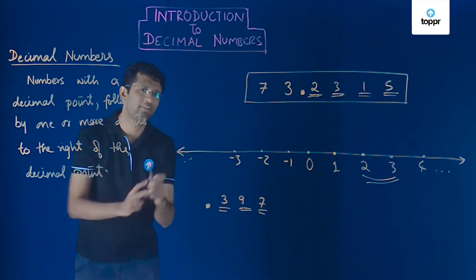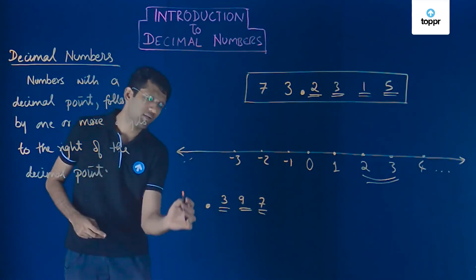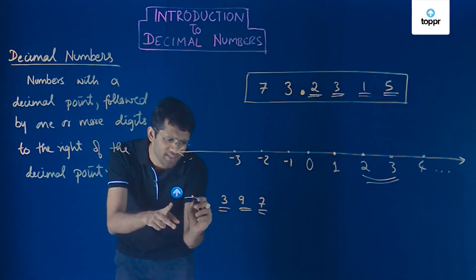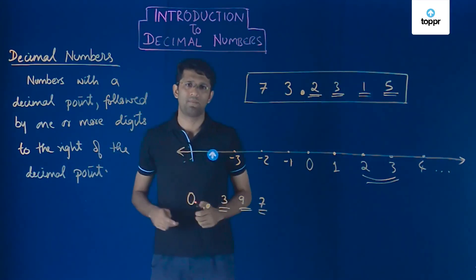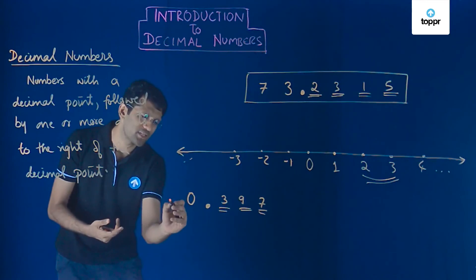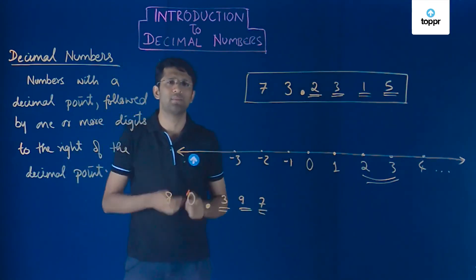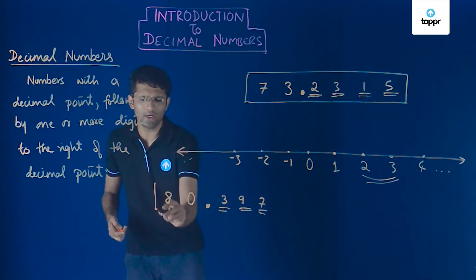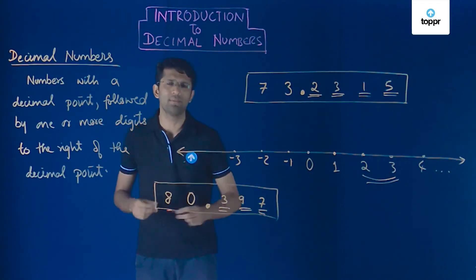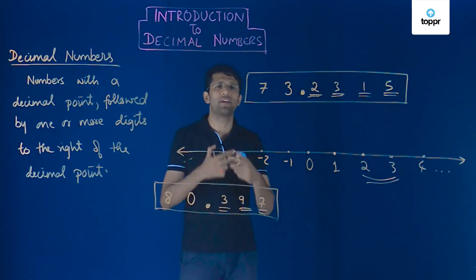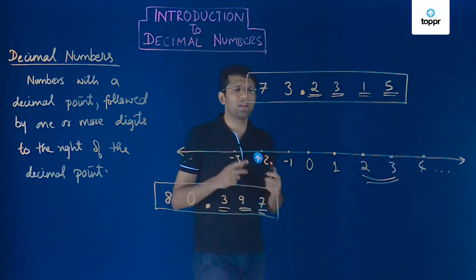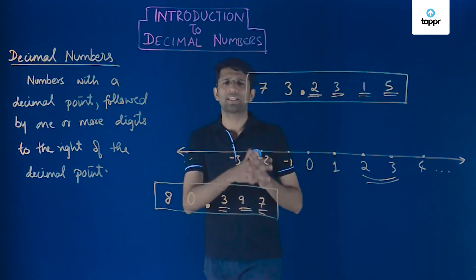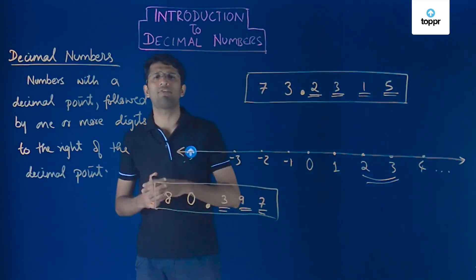By convention, we also write some digit to the left of the decimal point — it can be 0, 1, 2, 3, or any digit up to 9. If we include one more digit, say 8, to the left, we get 80.397, again a decimal number because we have a decimal point followed by one or more digits to the right. We have now understood what decimal numbers are and also learned that decimal numbers and fractions can be converted from one form to the other.